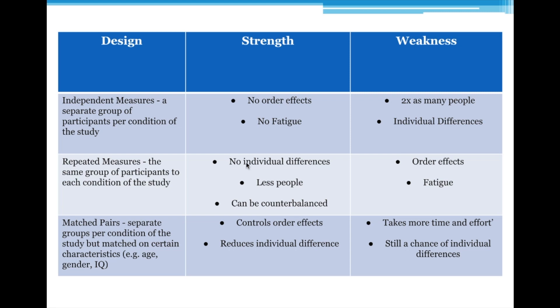Two key terms you need to be aware of in these evaluations: order effects — the effect of doing the study in a particular order — and individual differences, meaning individual characteristics. You don't have individual differences in a repeated measures design because the same people are being tested. You also need fewer people in your study, which is a strength — needing more participants was a weakness of independent measures design, whereas here you need fewer.